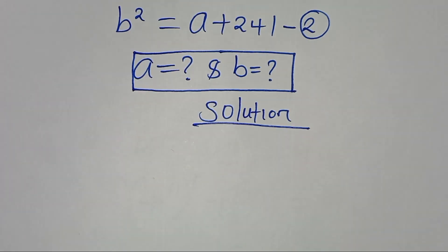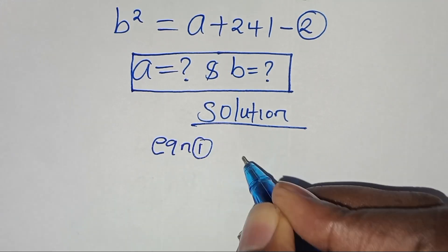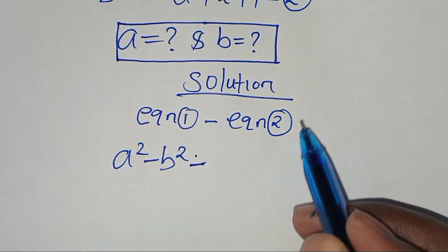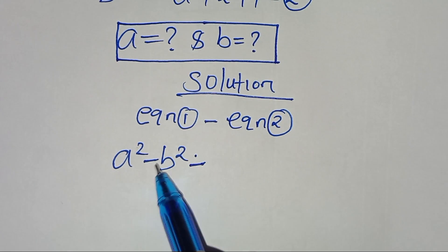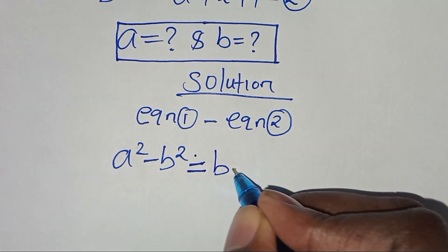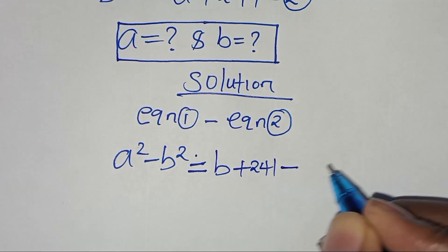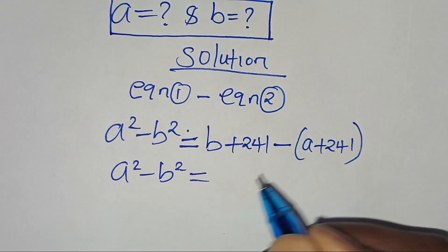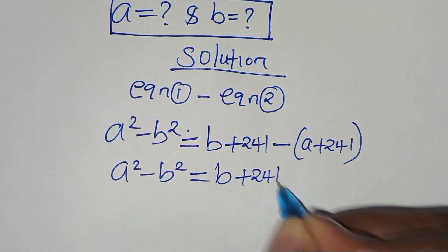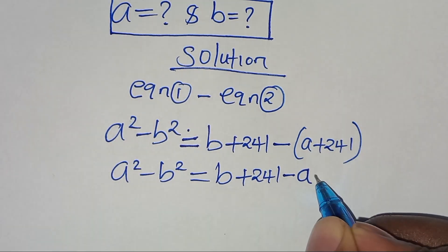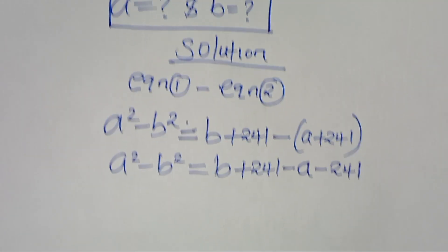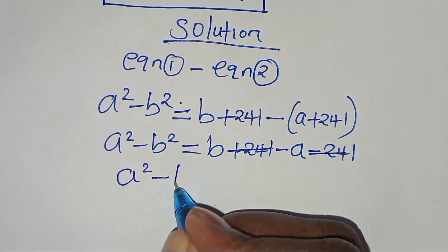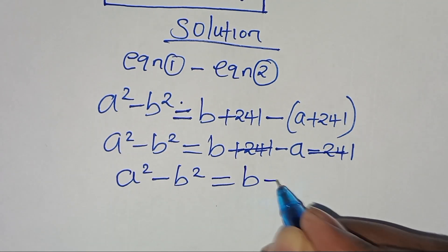The first step is to subtract equation 1 from equation 2. So we have a squared minus b squared, which is equal to b plus 241 subtract a plus 241. The 241 terms simplify, so that a squared minus b squared is equal to b minus a.